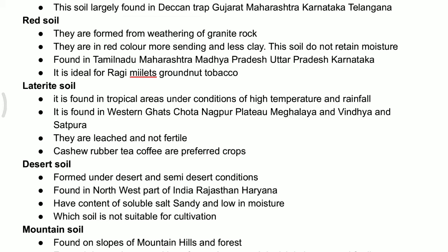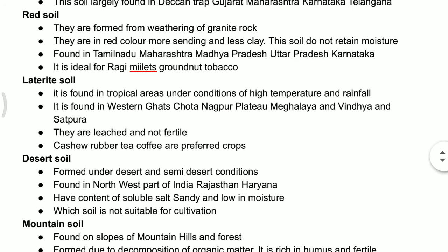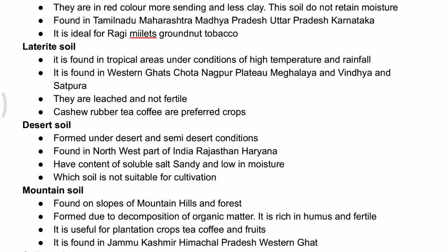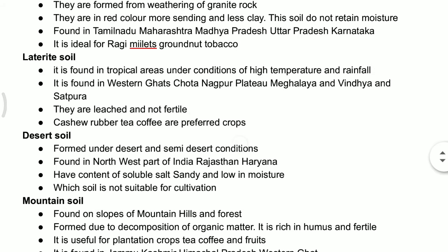This type of soil can be found in areas with high temperature and high rainfall — the Western Ghats, Chota Nagpur Plateau, Meghalaya, and South India. All those areas usually come under high rainfall. Because of leaching, this soil is not fertile. The crops preferred to cultivate in this soil are cashew, rubber, tea, and coffee — all plantation crops.